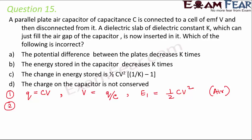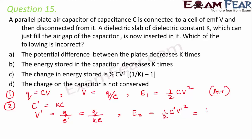After inserting the dielectric slab, the new capacitance C' = kC. Since the capacitor is disconnected, charge Q is conserved. The new potential difference V' = Q/(kC). The new energy stored = ½·C'·V'² = ½·kC·(Q/kC)² = Q²/(2kC).